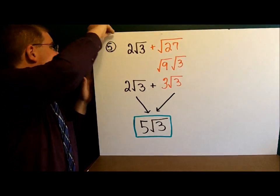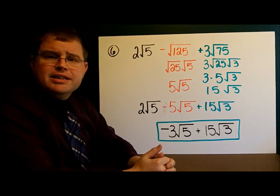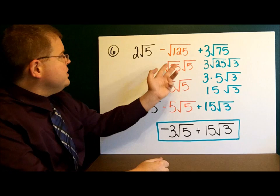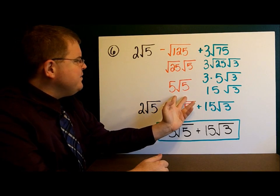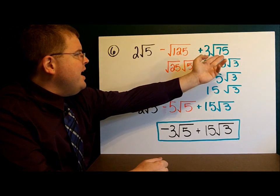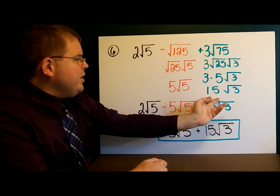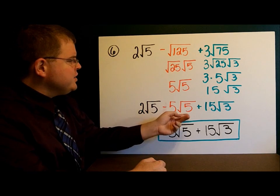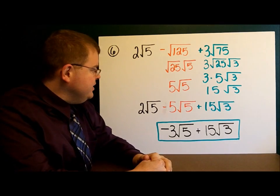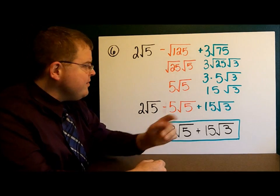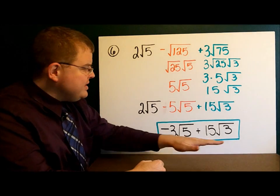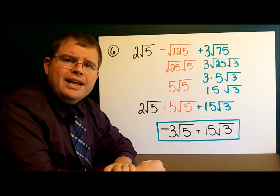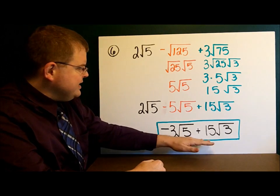Let's take a look at the answers. Example 6: we have 2 square roots of 5 minus the square root of 125 plus 3 square roots of 75. No like terms, but let's simplify the radicals. The square root of 125 simplifies to 5 square roots of 5. The square root of 75 breaks down to 25 and 3, giving us 15 square roots of 3. So I have 2 square roots of 5 minus 5 square roots of 5 plus 15 square roots of 3. 2 minus 5 is negative 3, giving us negative 3 square roots of 5 plus 15 square roots of 3. Notice that square root of 3 and square root of 5 are not like terms — they have different radicands — so we cannot combine those terms. This is our final answer for number 6.